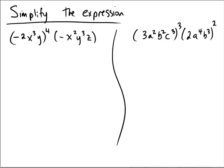My recommendation is to first pull in the power by the distributive property, distributing exponents through multiplication. Negative 2 to the power of 4: negative 2 times negative 2 is 4, times negative 2 is negative 8, times another negative 2 is just 16. x to the third to the fourth would be x to the twelfth, and y is just being raised to the fourth.